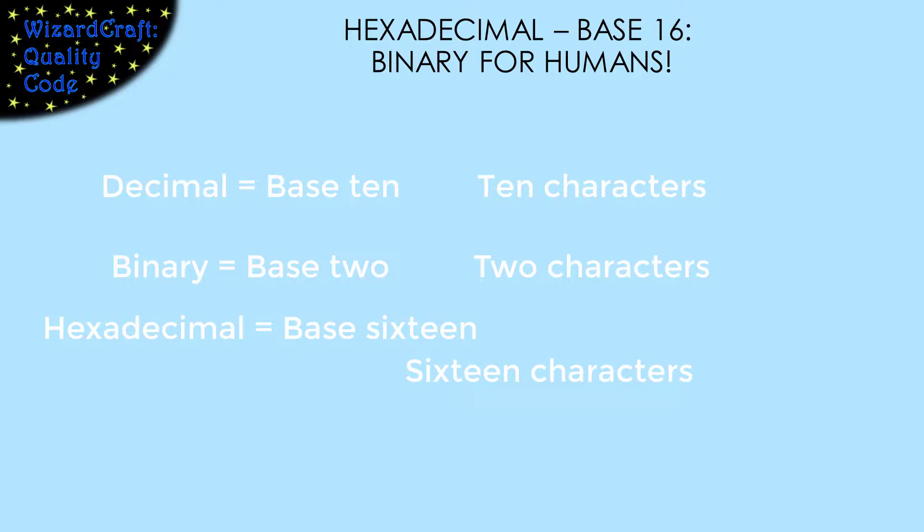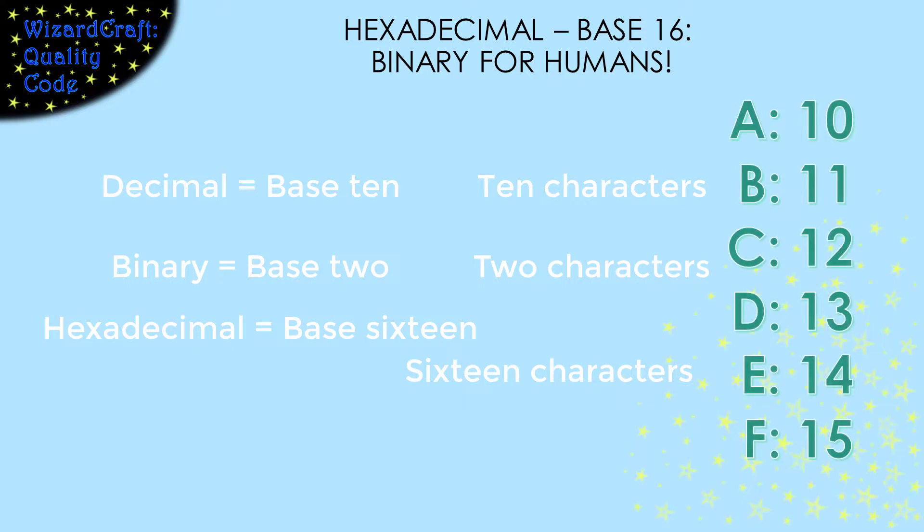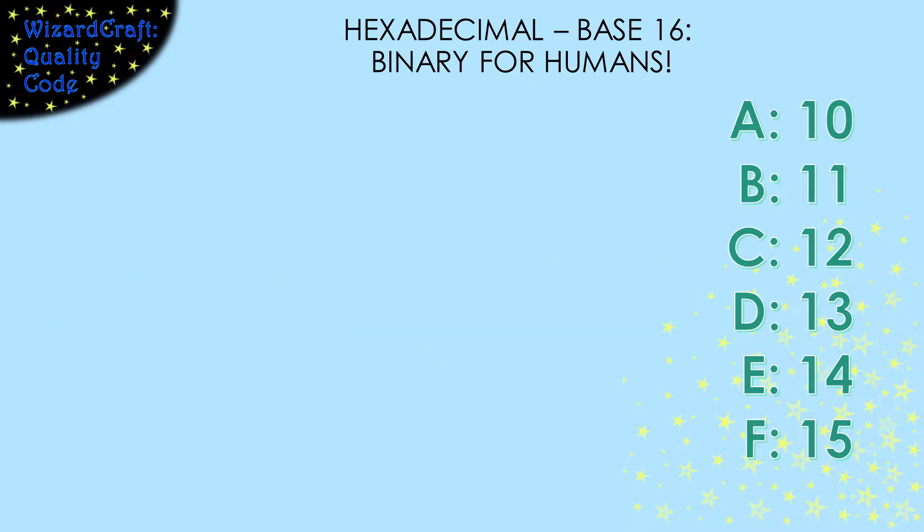We do that by using 0 through 9 for the same values that we use them for in decimal, but then we added the characters a through f to represent the values 10 through 15. So to convert binary to hexadecimal, we make groups of 4 positions. Then we convert each position from binary to its appropriate hexadecimal character.